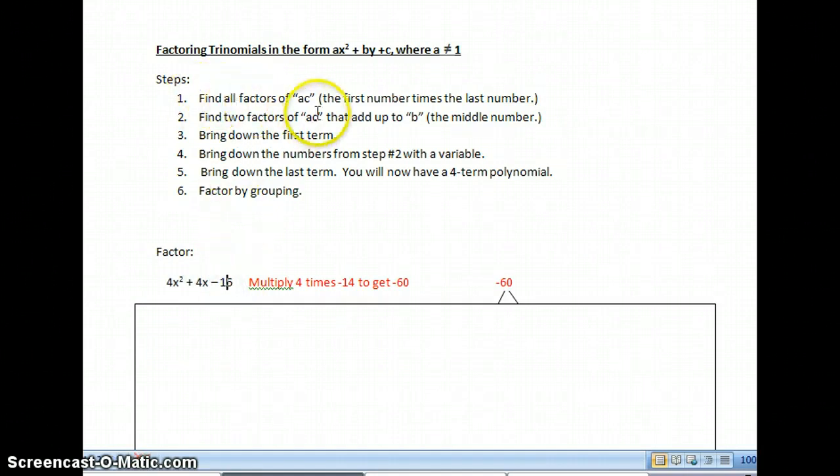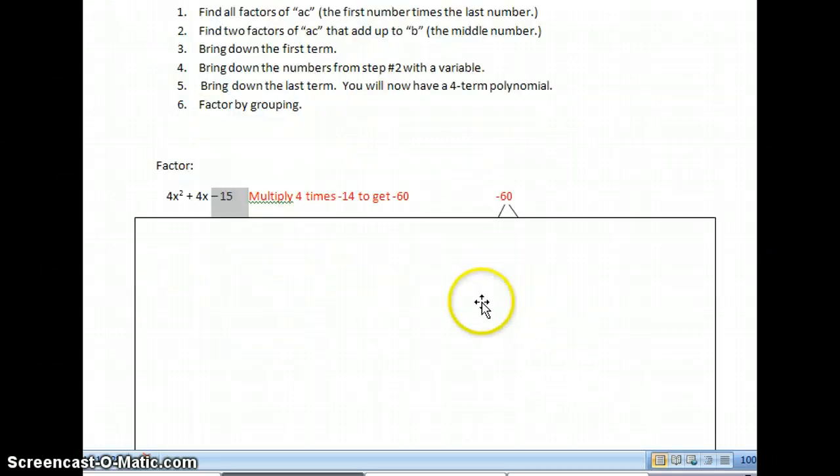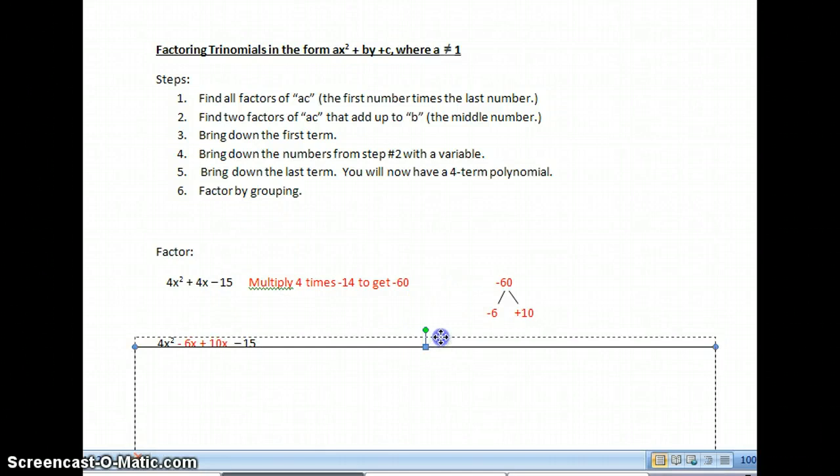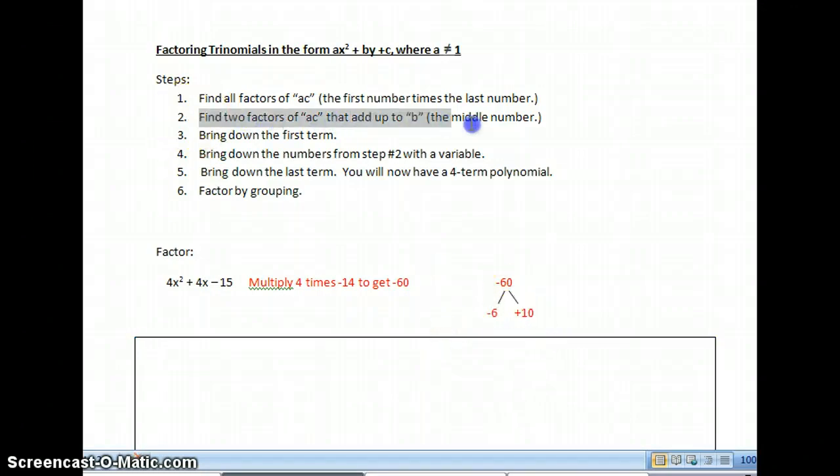Step number one is a little different. I'm going to find all the factors of AC, or all the factors of the first number and the second number. So I'm going to say 4 times negative 15. 4 times negative 15 gives me negative 60. And then I'm going to find two factors of that negative 60 that add up to the middle number, that add up to positive 4. So I've got 6 and 10, I've got 30 and 2, and I've got a whole bunch of them. But I picked negative 6 positive 10. And if I do negative 6 plus positive 10, I'm going to get positive 4. And that's what I wanted, my positive 4.